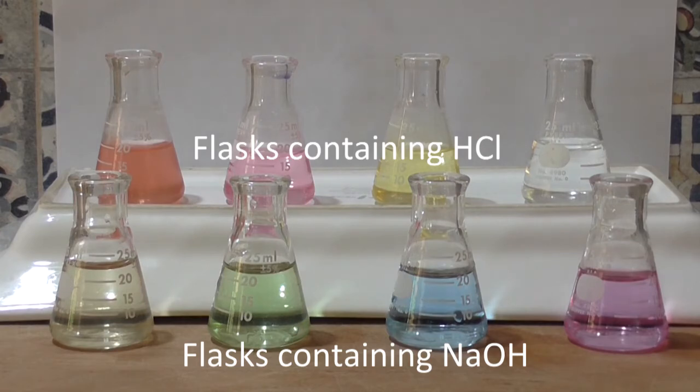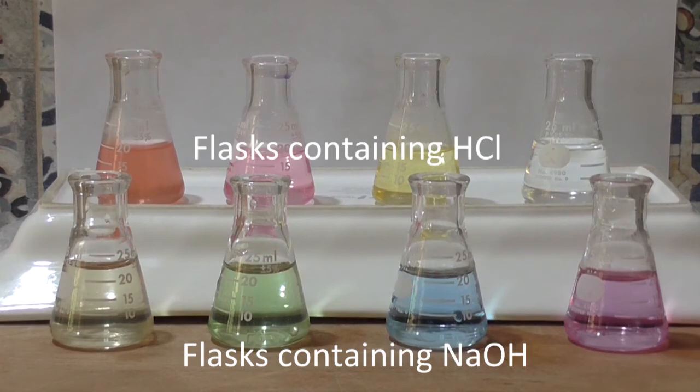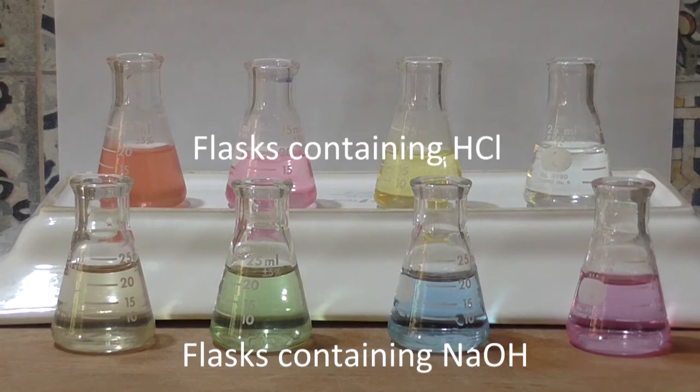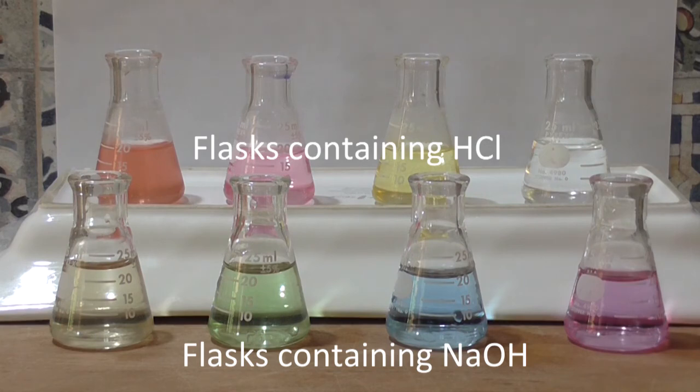Have a look at how the indicators change color when either an acid or a base has been added to them. You might have noticed that the phenolphthalein did not change color at all. Phenolphthalein only changes color when the pH is around 9, otherwise it is colorless. I'll discuss this in more detail in a later video.